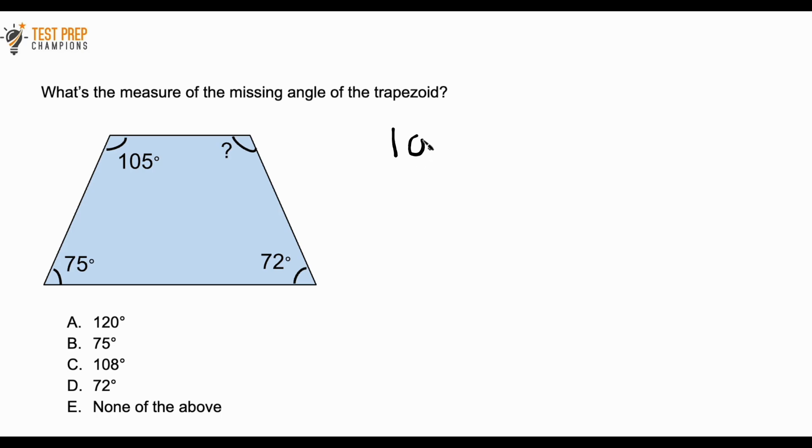Basically, what we can do here is take all the angles and write an equation. We've got 105, we've got 75, we've got 72, and we've got this one angle here that we don't know, so I'm just going to call it X. We can set this all equal to 360. For four-sided plane figures like trapezoids, all the internal angles are going to add up to 360 degrees. That's why we wrote this equation out.